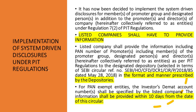Listed companies shall provide information including the PAN number of the promoters, members of the promoter group, designated persons, and directors — collectively referred to as entities — to the designated depository selected in terms of SEBI circular reference number 85 dated May 28, 2018. For PAN-exempt entities, the demat account numbers shall be specified by the listed company. This information shall be provided within 10 days, on or before 19th September 2020.